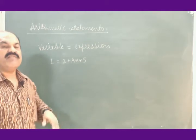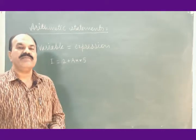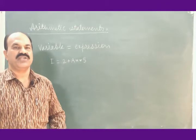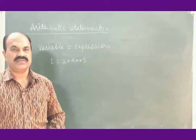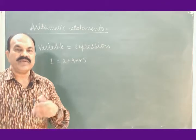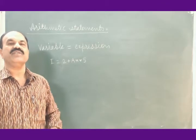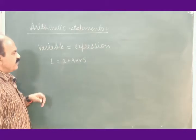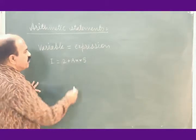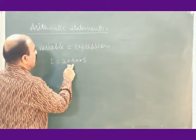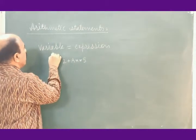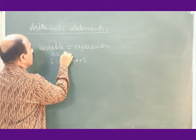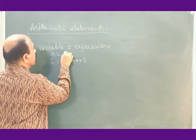What is a variable? A variable is a name given to a memory location of the memory of a computer. For simplicity, let us suppose that the value of A provided in the program is 5.